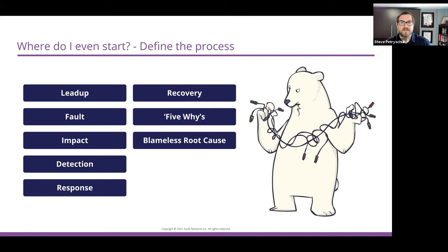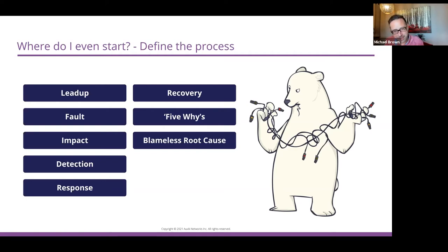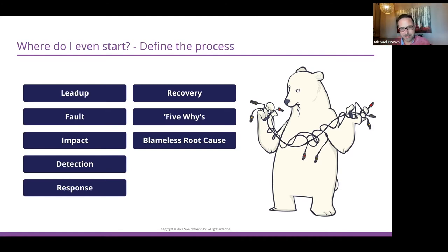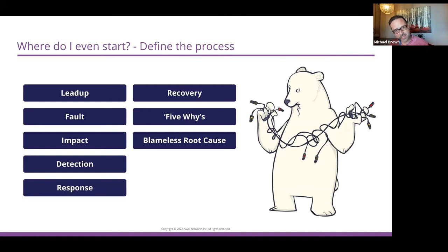After the five whys, you dive into the blameless root cause. This is what was that root cause — usually the last step of your five, six, or seven whys analysis. We want to describe what needs to change. We don't really want to place blame — at least we don't at Auvik. We've got a very blameless, pretty healthy culture. We know people didn't intend to do something wrong — no one's applying configuration changes with malicious intent. But without understanding what the root cause was, it makes it really hard to prevent it from happening in the future. Trying to avoid confrontation in this process is actually really beneficial because you don't want people to feel defensive, which hinders the transparency and detailed insight you need.